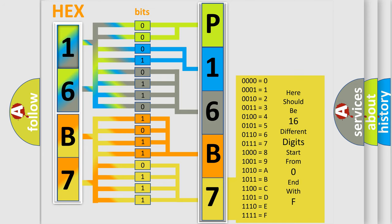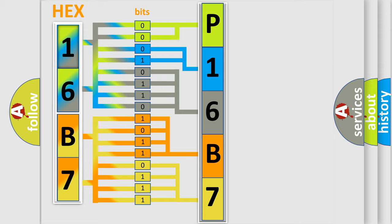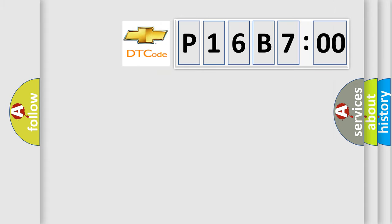We now know in what way the diagnostic tool translates the received information into a more comprehensible format. The number itself does not make sense to us if we cannot assign information about what it actually expresses. So, what does the diagnostic trouble code P16B700 interpret specifically for Chevrolet car manufacturers?